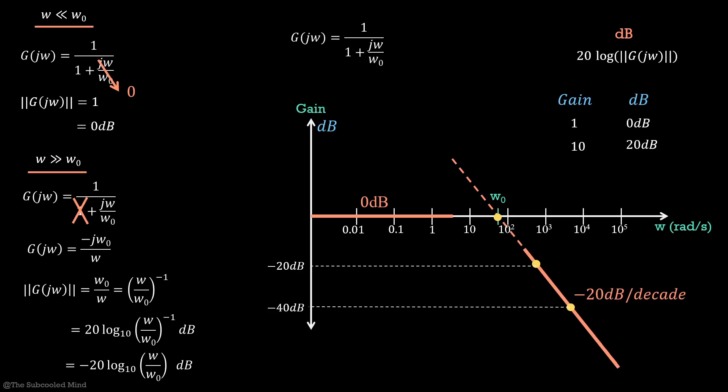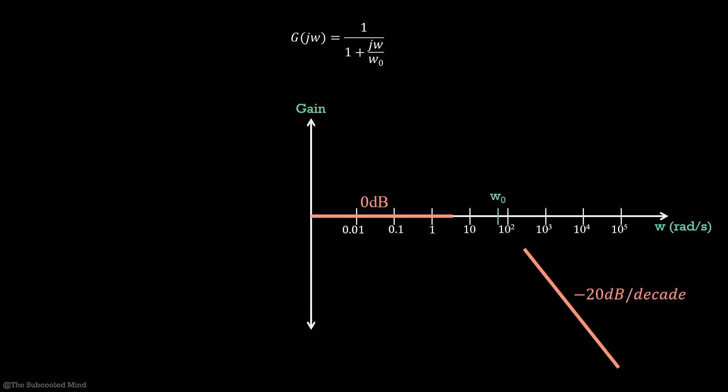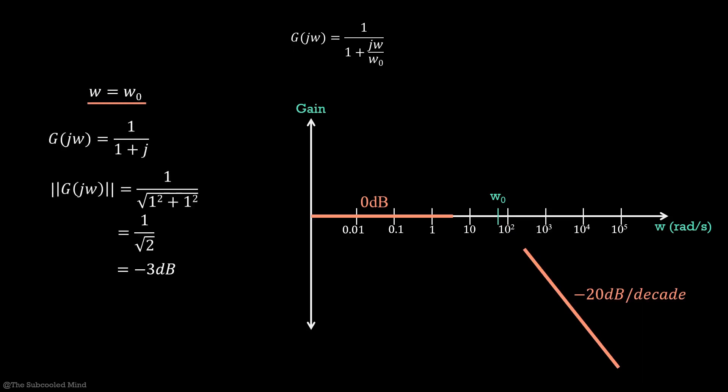We still need to find what happens near ω₀. For this, we substitute ω equal to ω₀ and solve for the gain, which comes out to be 1/√2, or −3 dB. This is what the complete gain plot looks like.